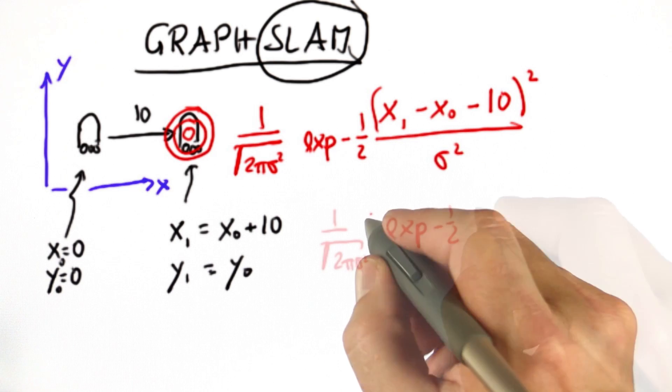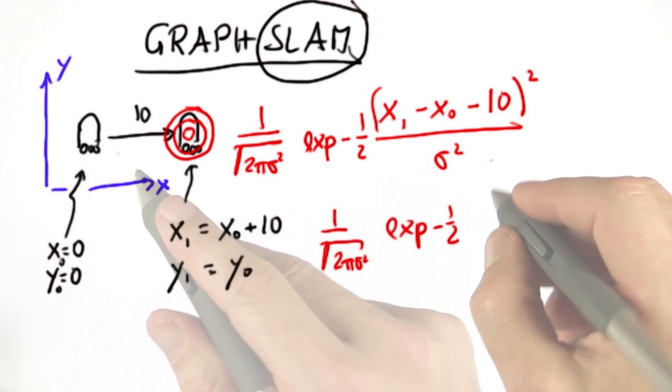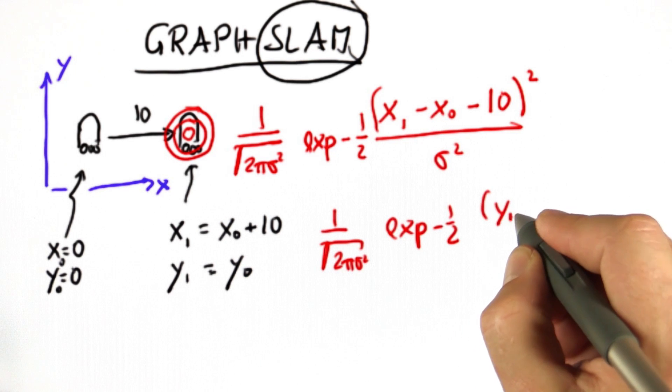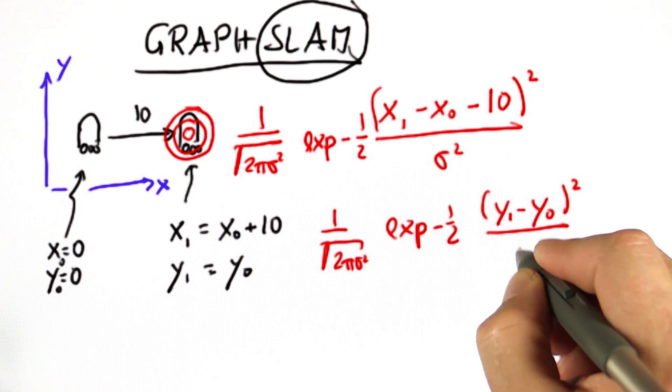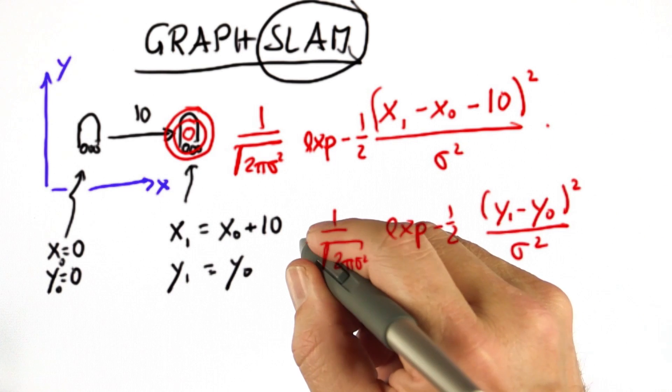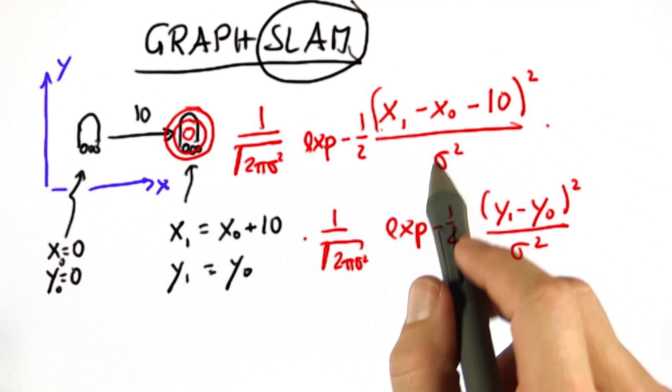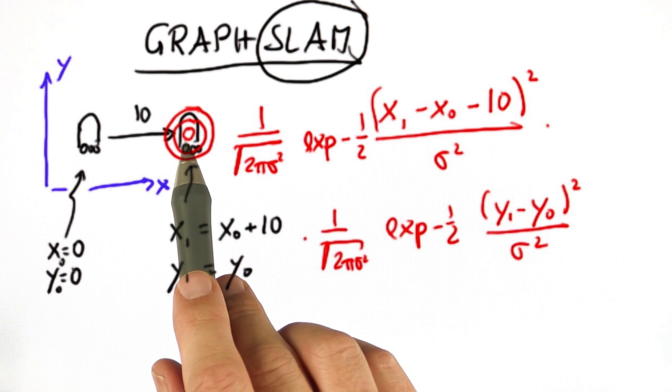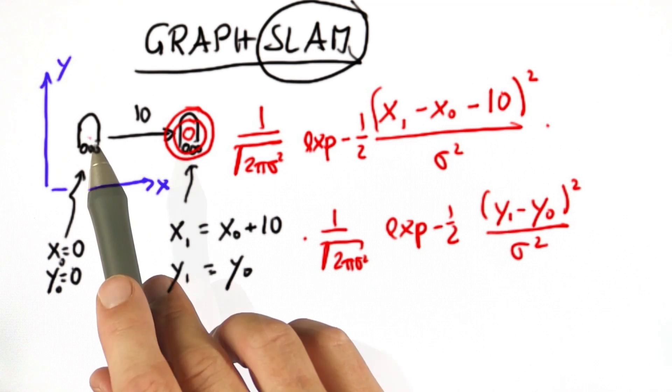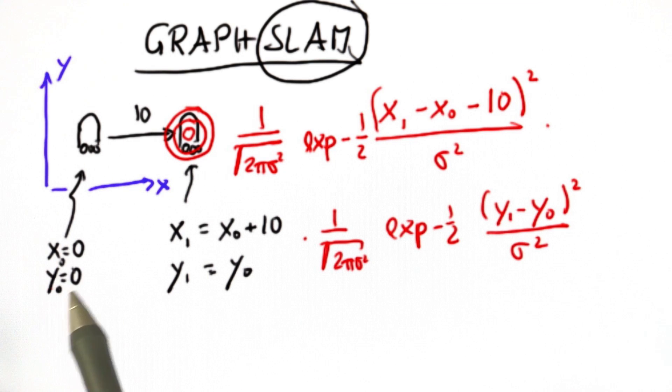We can do the same for y, and since there's no change in y according to our motion, all we ask is that y1 and y0 are as close together as possible. The product of these two Gaussians is now our constraint. We wish to maximize the likelihood of the position x1 given that the position x0 is 0, 0.